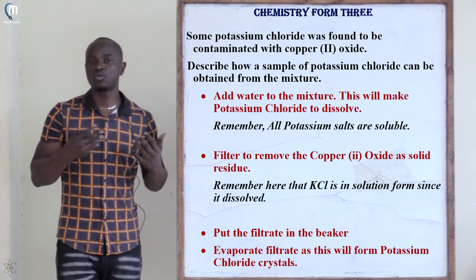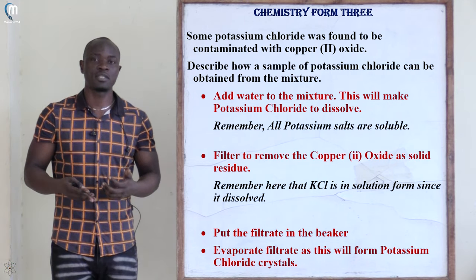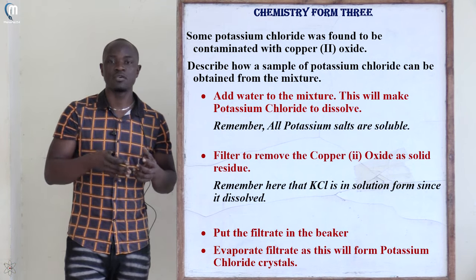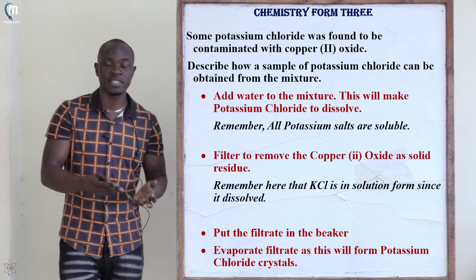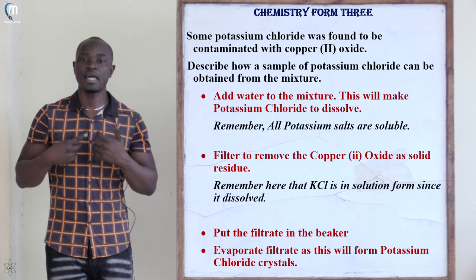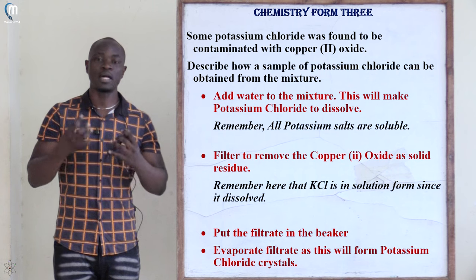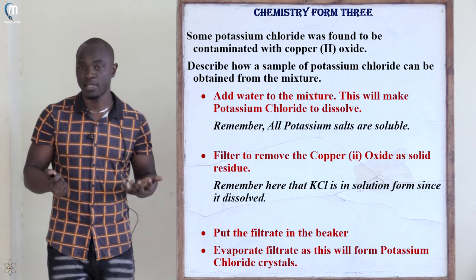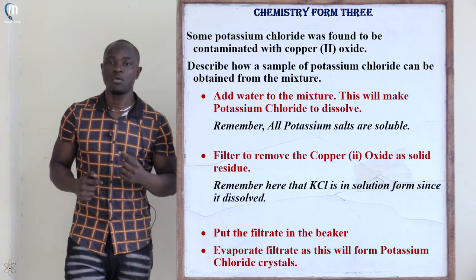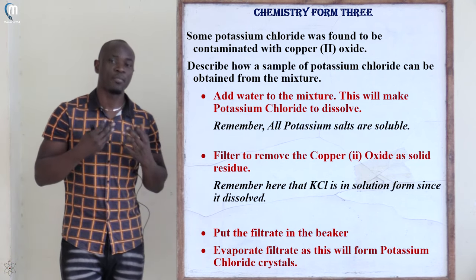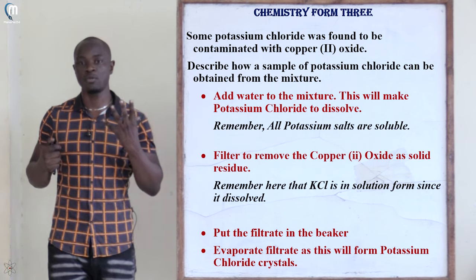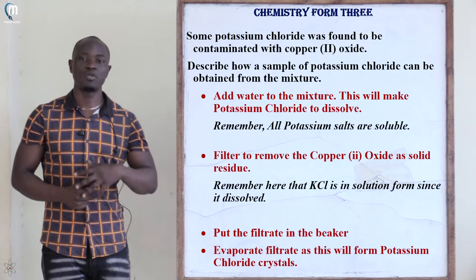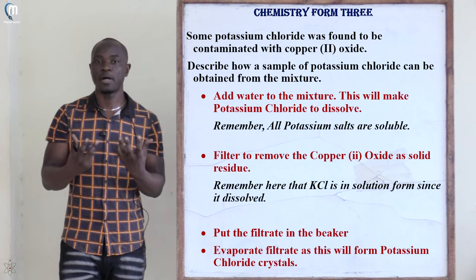Next, filter the mixture to remove the copper(II) oxide residue. The potassium chloride solution is collected as the filtrate, while the copper(II) oxide is collected as the undissolved solid residue. Then evaporate the filtrate — water escapes and solid potassium chloride remains in the beaker. That is how to separate the mixture.